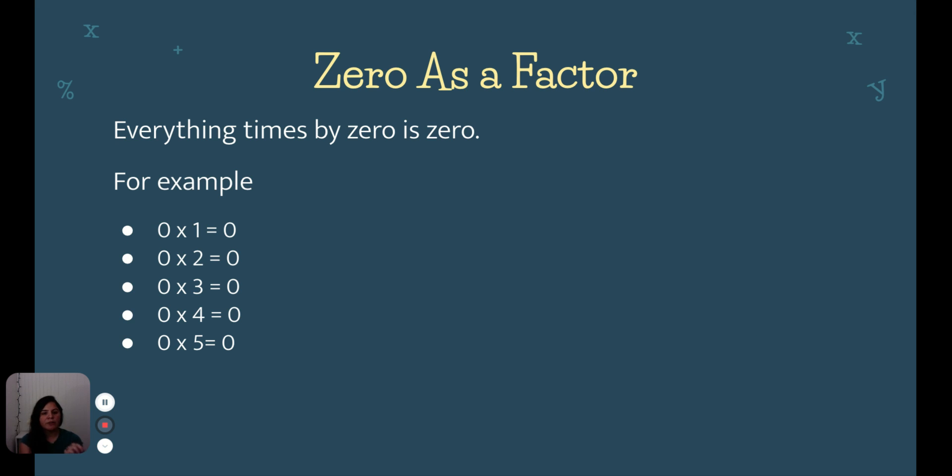Zero as a factor: everything times zero is always going to be zero. For example, 0 times 1 is 0, 0 times 2 is 0, 0 times 3 is 0, 0 times 4 is 0, and 0 times 5 is 0. Anytime you multiply a number by zero, your answer will always be zero.